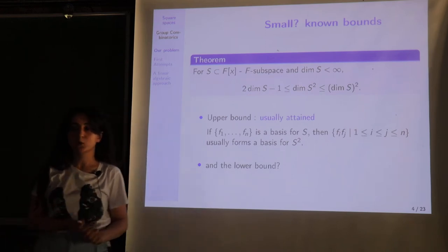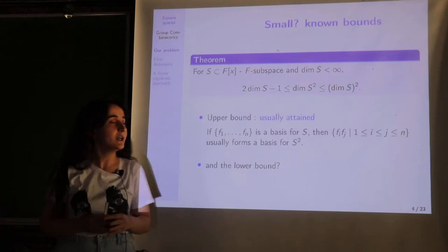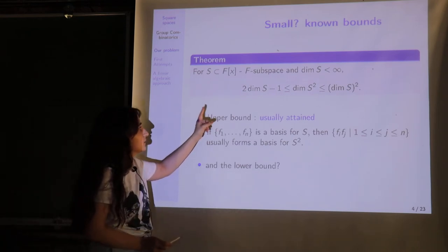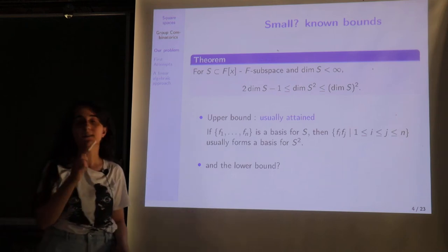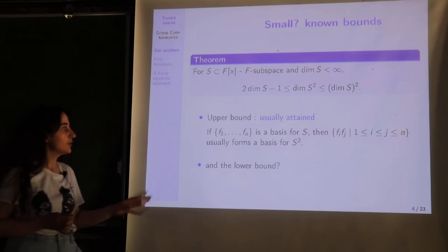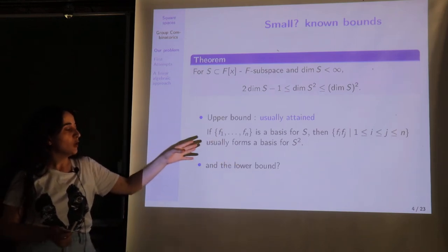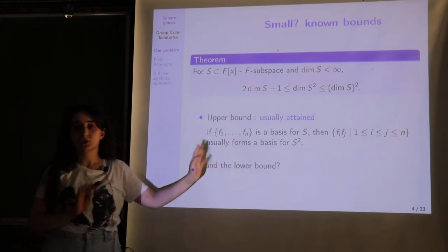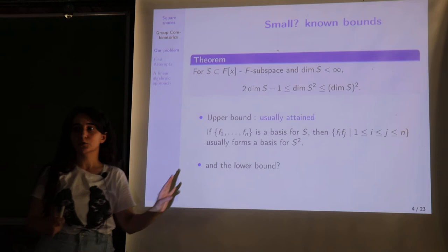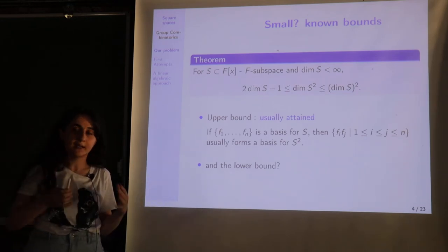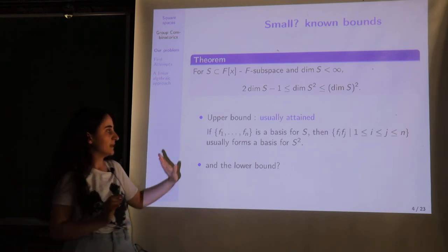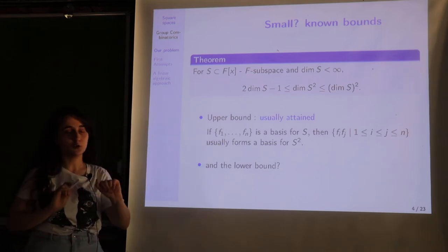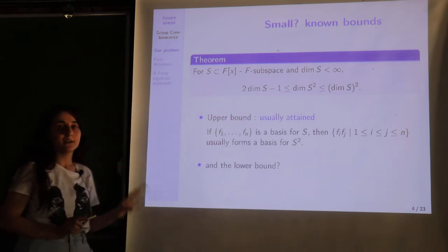What does 'small' mean? To understand this, we first consider the bounds for the dimension of S². We know that for a finite-dimensional space, the dimension of S² is between 2·dim(S) − 1 and dim(S)+1 choose 2. For the upper bound, if we take a basis F1 up to Fn for S and consider all products Fi·Fj where i ≤ j, this is always a generating set, and for a generic subspace it is also linearly independent, so it usually forms a basis, giving the upper bound of approximately dim(S) choose 2.